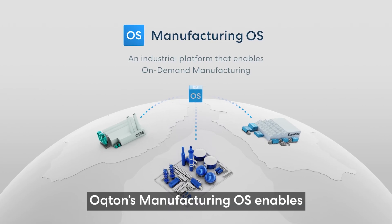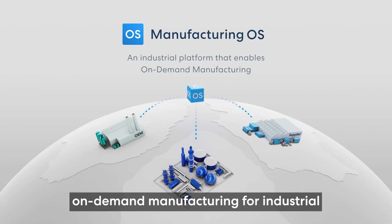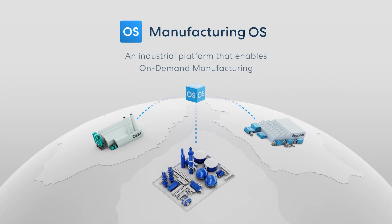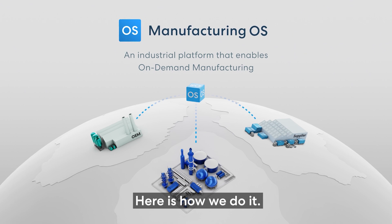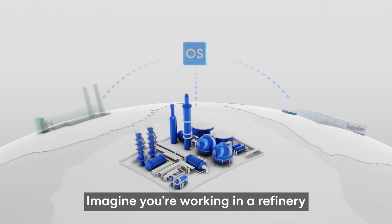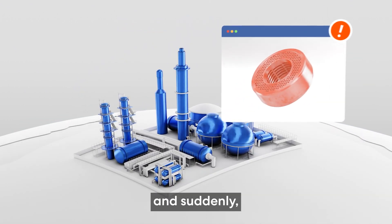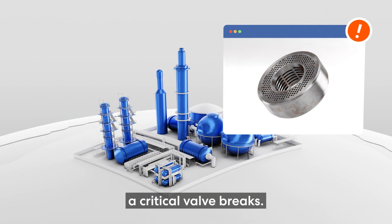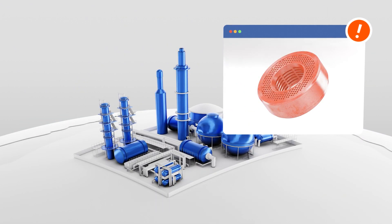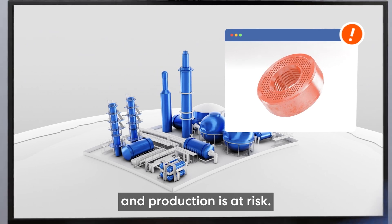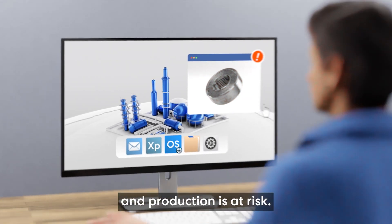Oaktan's Manufacturing OS enables on-demand manufacturing for industrial. Here is how we do it. Imagine you're working in a refinery and suddenly a critical valve breaks. Downtime looms and production is at risk. What now?